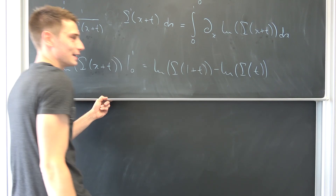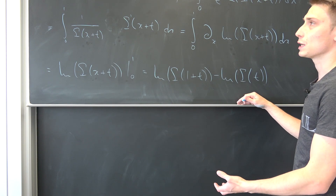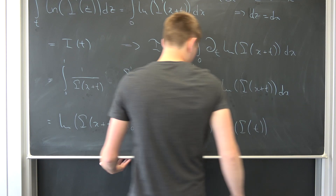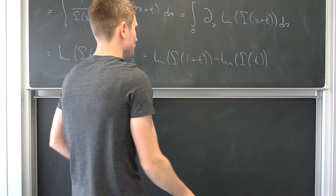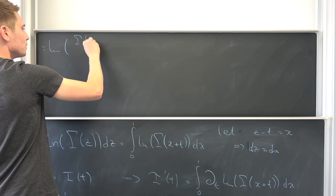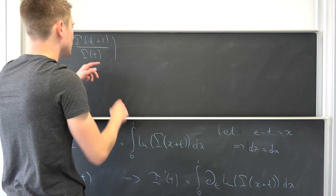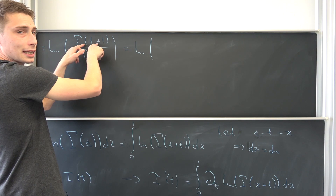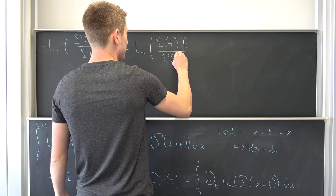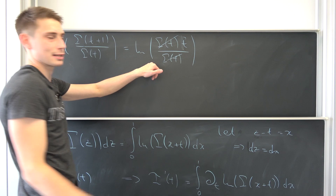So we've reached I′(t) = ln Γ(1+t) − ln Γ(t). We can simplify this using log rules: this equals the natural log of Γ(t+1)/Γ(t). Now by the recurrence relation of the gamma function, Γ(t+1) = t·Γ(t), so Γ(t+1)/Γ(t) = t·Γ(t)/Γ(t) = t. The Γ(t) terms cancel beautifully, leaving us with I′(t) = ln(t).